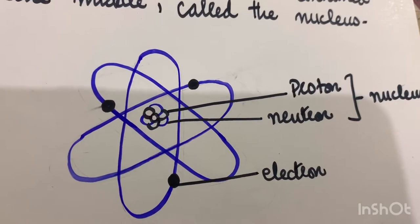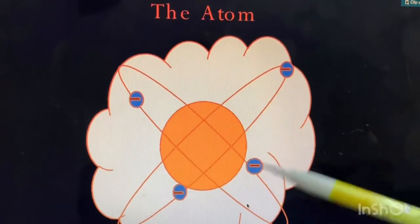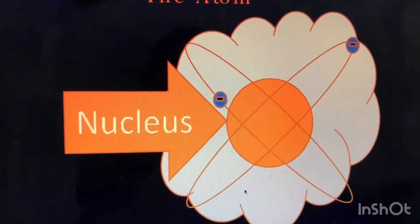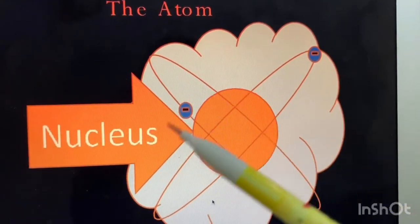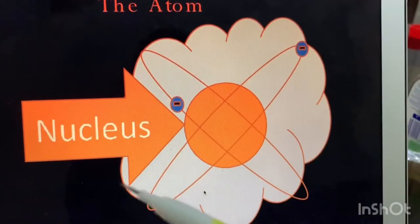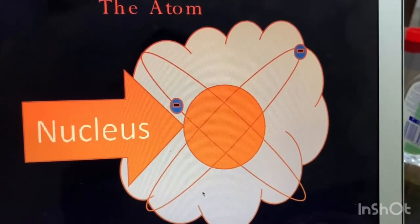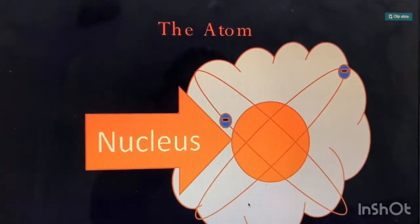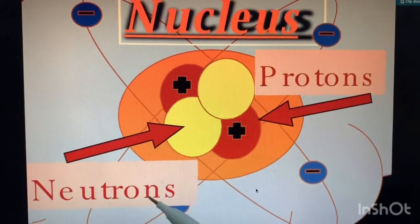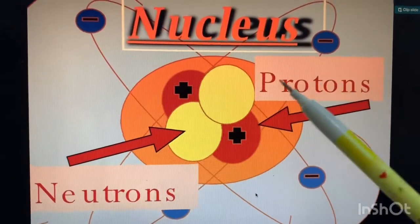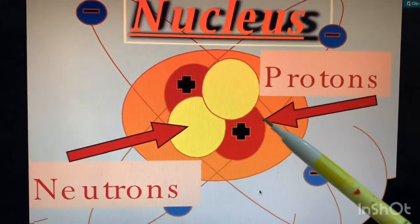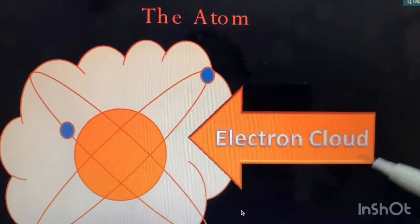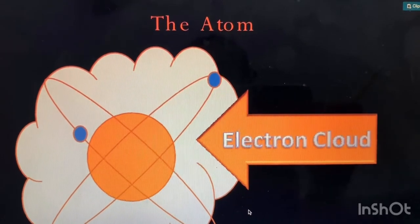Looking at the diagram of an atom: the large cloud-like structure is the atom, the big dense center is called the nucleus shown in orange. Inside the nucleus we have protons and neutrons. Protons are the positive ones and neutrons are the neutral ones. The electron cloud surrounds the nucleus on the outside.